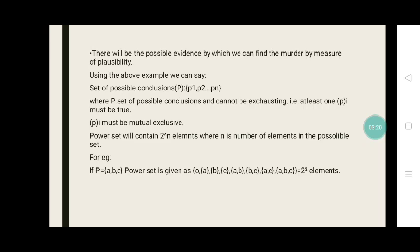For example, if P equals A, B, C, the power set is given as null set, A, B, C, AB, BC, AC, or ABC. So 2 to the power of 3, the result would be 8 elements.